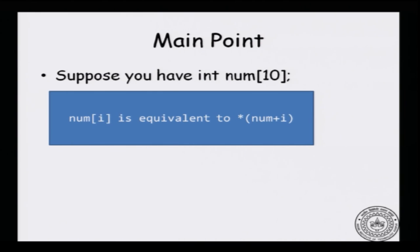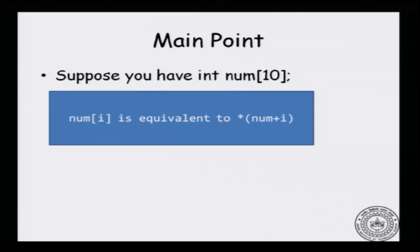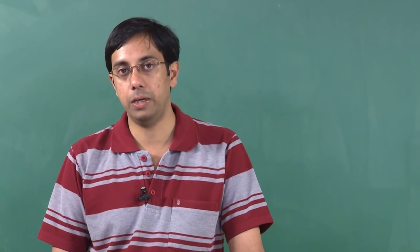The main point of this lecture: if you have an integer array int num[10], then num[i] is exactly equivalent to *(num+i). This is not an analogy — this is exactly what C actually does. num[i] is translated to *(num+i). Arrays and pointers in C are very intimately related. Thank you.